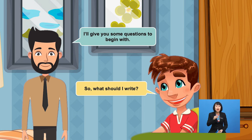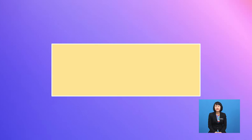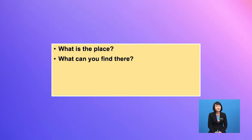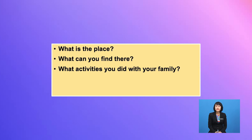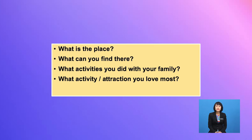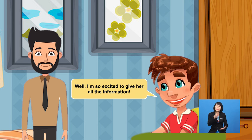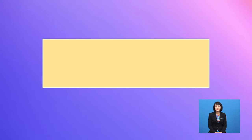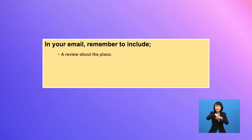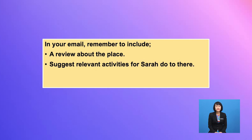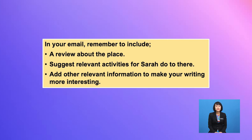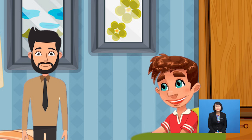I'll give you some questions to begin with. What is the place? What can you find there? What activities did you do with your family? What activity or attraction did you love most? Is there anything you dislike about that place? Well, I'm so excited to give her all the information. In your email, remember to include a review about the place, suggest relevant activities for Sarah to do there, and add some other relevant information to make your writing more interesting.